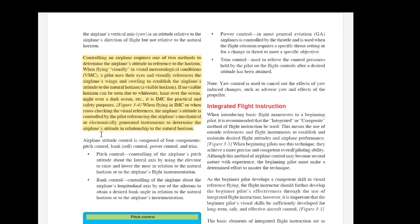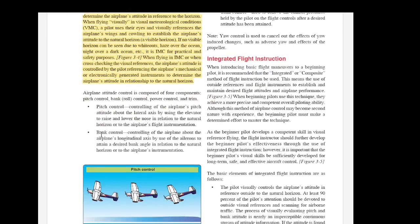Then it goes on to say if no visible horizon can be seen due to whiteouts, haze over the ocean, night over a dark ocean etc., it is IMC for practical and safety purposes. When flying in IMC or when cross-checking the visual references, the airplane's attitude is controlled by the pilots referencing the airplane's mechanical or electronically generated instruments to determine the airplane's attitude in relationship to the natural horizon. Basically you've got to follow, you've got to then look at the instrument panel if you don't have a visible horizon.